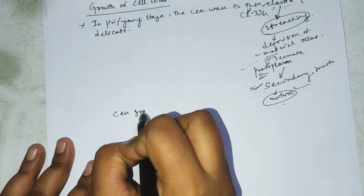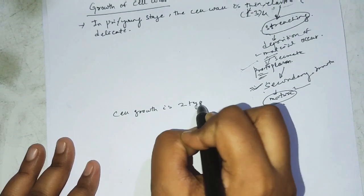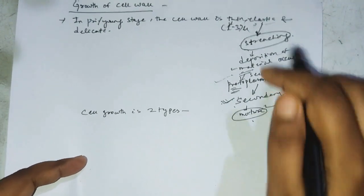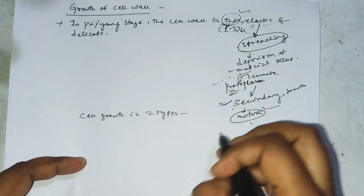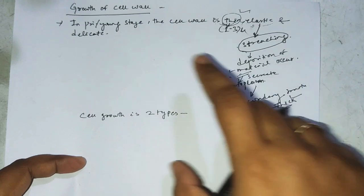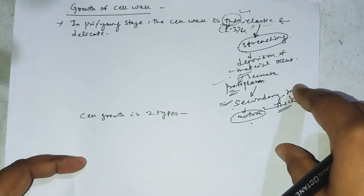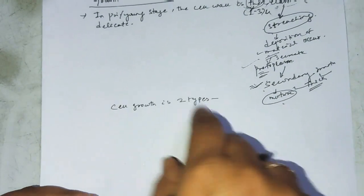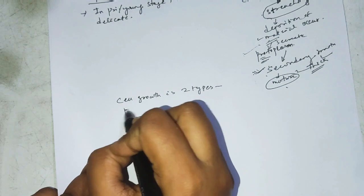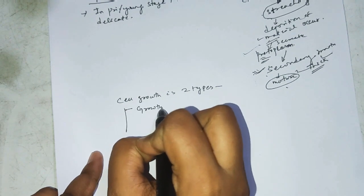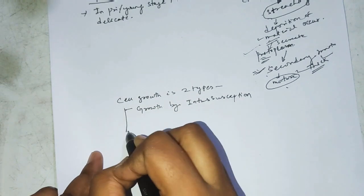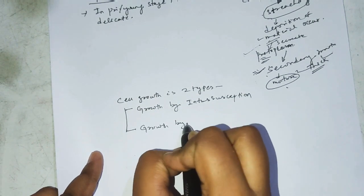Cell growth is of two types. First is growth by intussusception, and second is growth by apposition. The two types depend on where the material secreted by the plasma membrane is deposited.